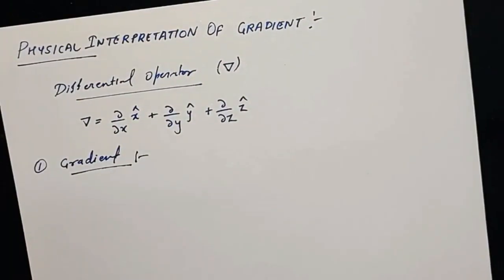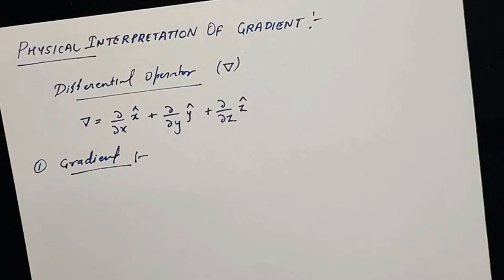This is the first part of the lecture, where we will discuss the physical interpretation of gradient. In the next part we will discuss the physical interpretation of divergence, and in the third part we will discuss the physical interpretation of curl.